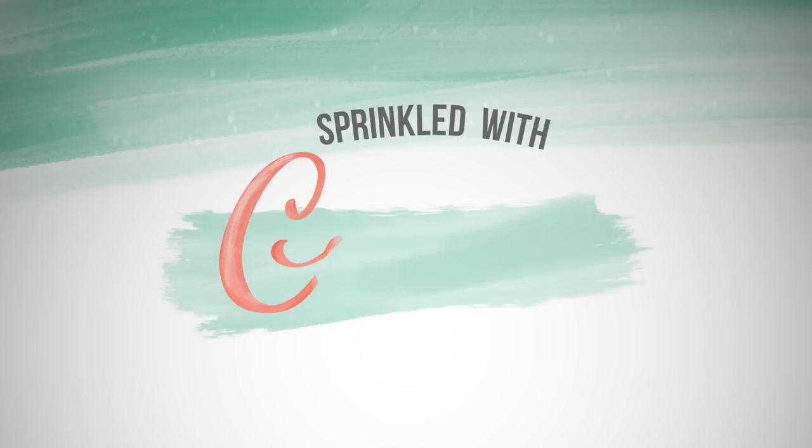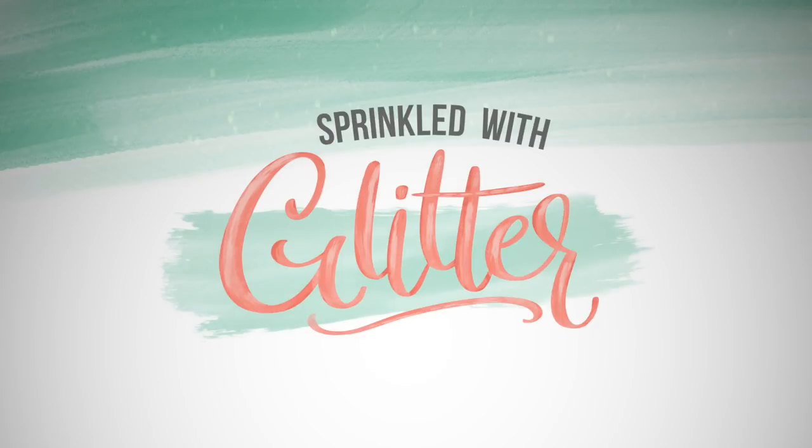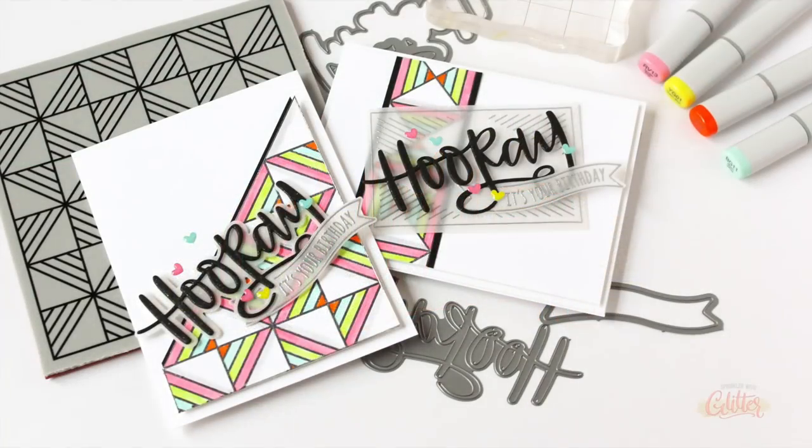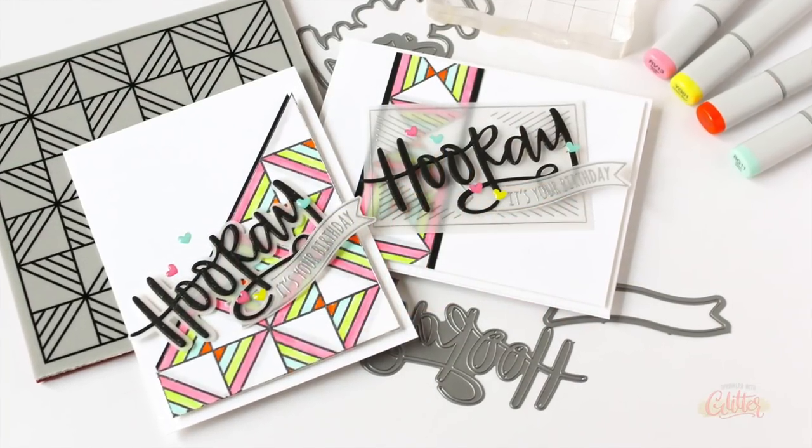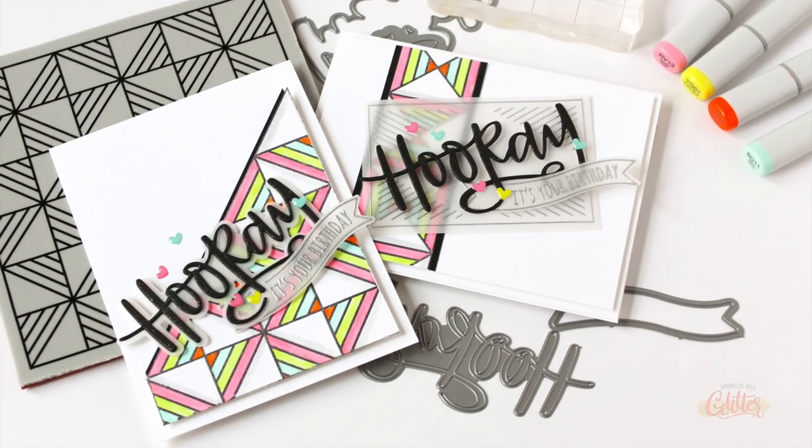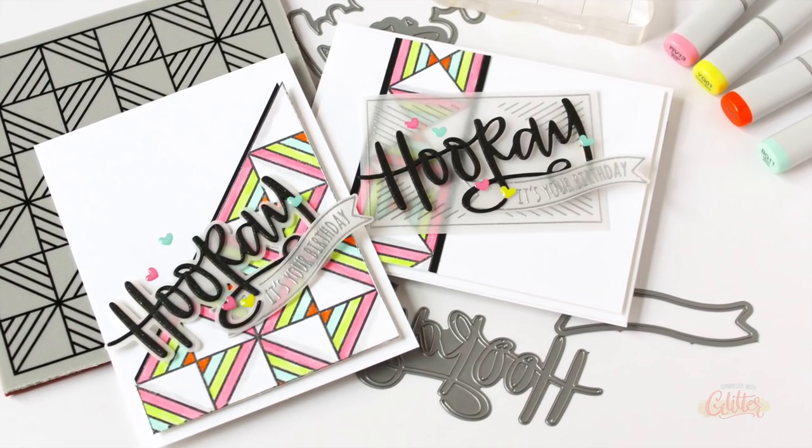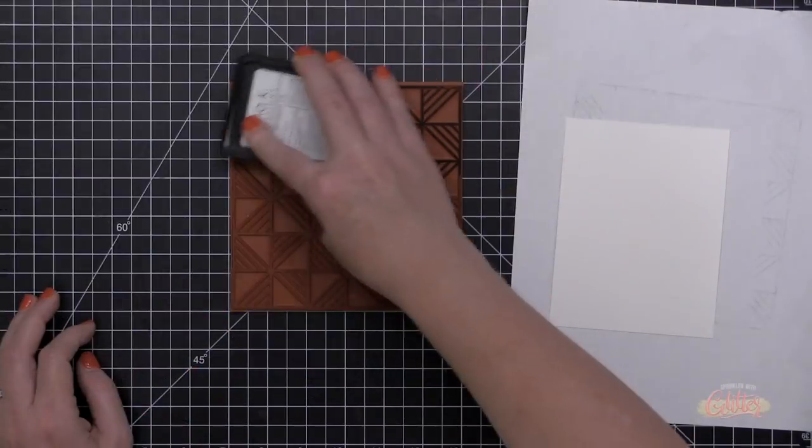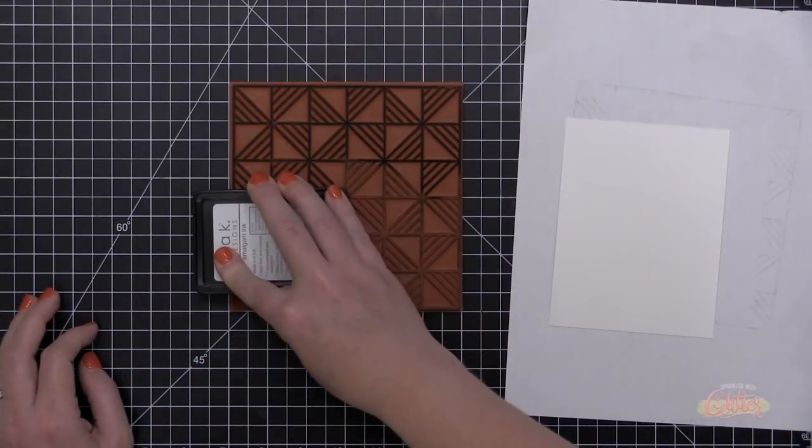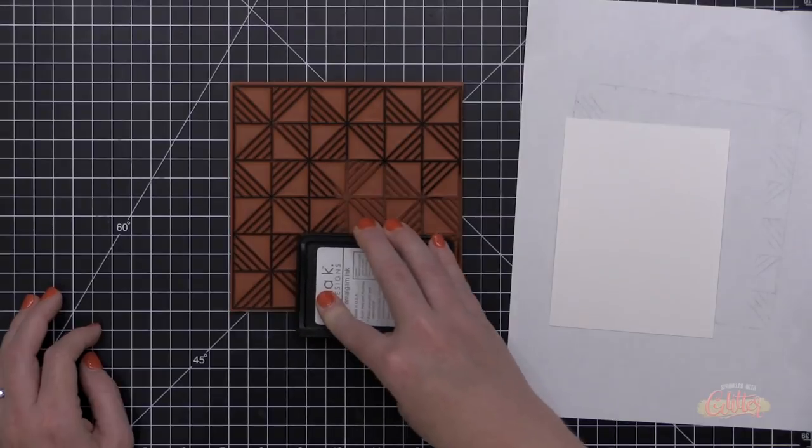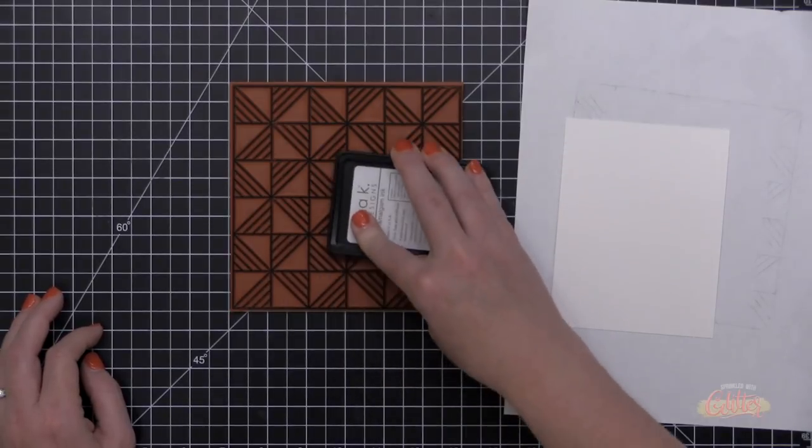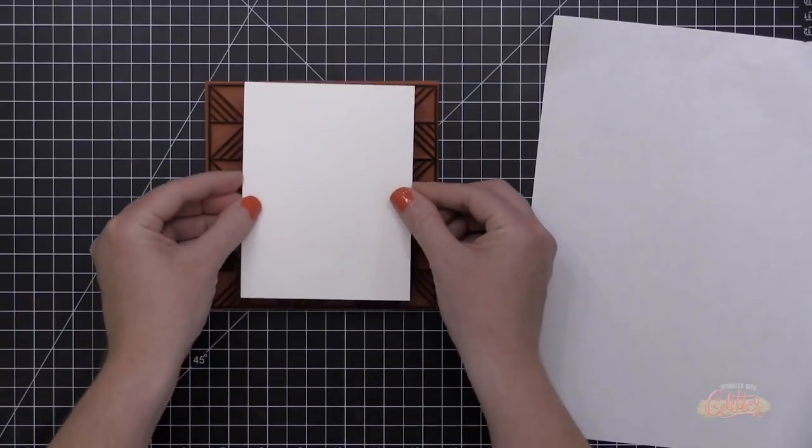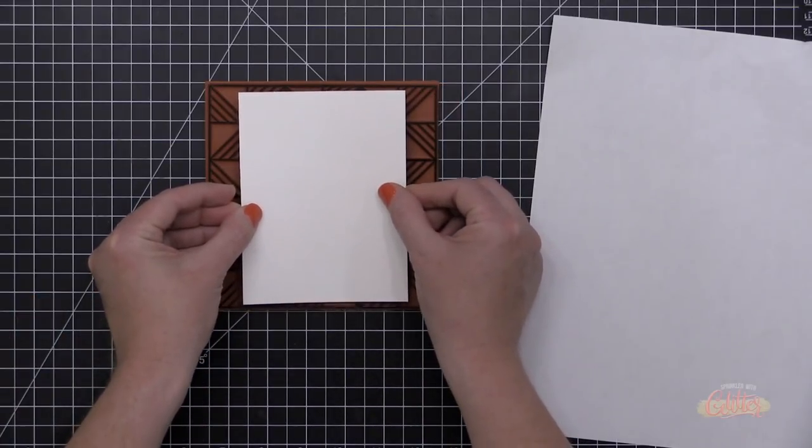Hey everyone, it's Carissa Wiley here for Neat and Tangled. Today I'm going to show you how I'm taking one background and making two cards. I'm keeping these cards really simple so that the focus remains on that colorful 80s inspired background. The 80s called they want their colors back, but I thought this would be a great way to show you how you can maximize your time in the craft room.